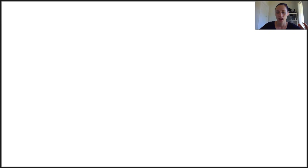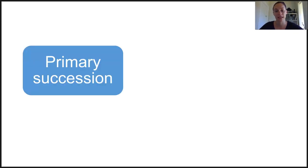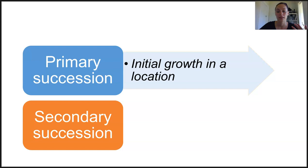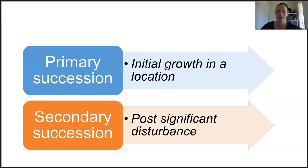There are a few types of ecological succession, and our focus is on primary and secondary. In short, primary succession occurs in an area where there's been no pre-existing growth, and secondary succession occurs where there has been significant disturbance in an area that was previously inhabited.